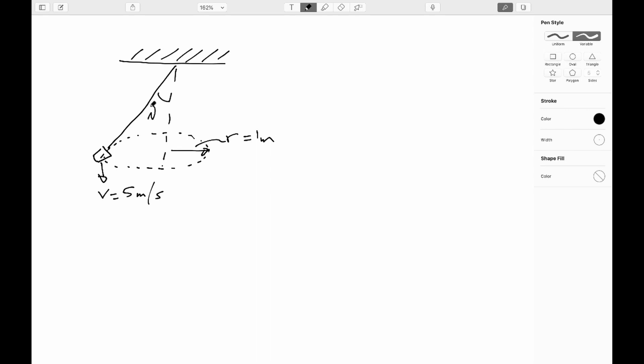We'll say that my bob is moving around in a horizontal plane at five meters per second. What I'd like to know is what is the angle that the string is making with respect to the vertical. Now at first this may look absolutely horrendous but it's not as bad as you might fear.